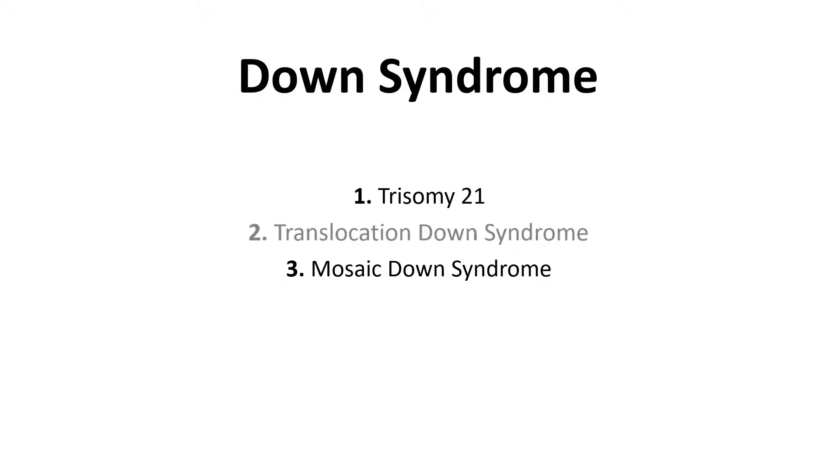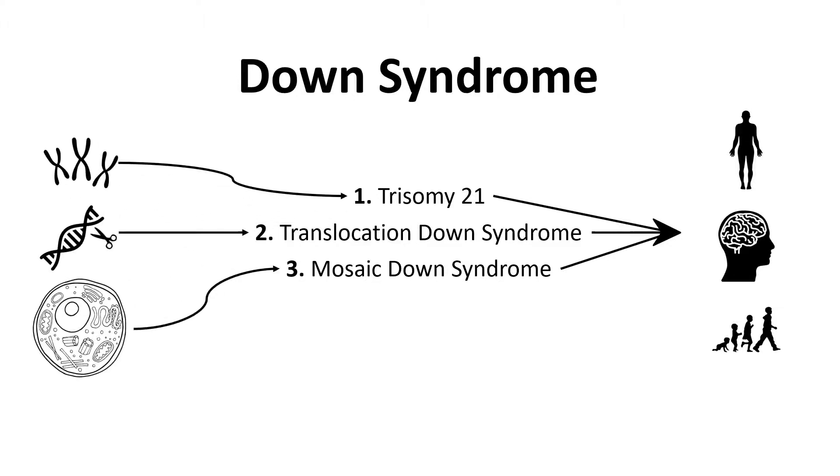Trisomy 21, Translocation Down syndrome, and Mosaic Down syndrome. Although the symptoms and resulting behaviors in the affected individuals might be similar for all these types, the originating mechanisms vary drastically.